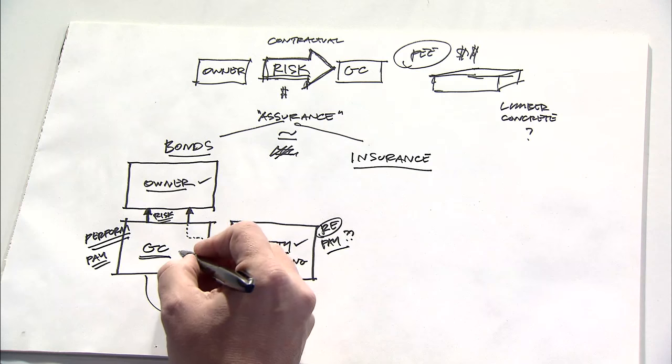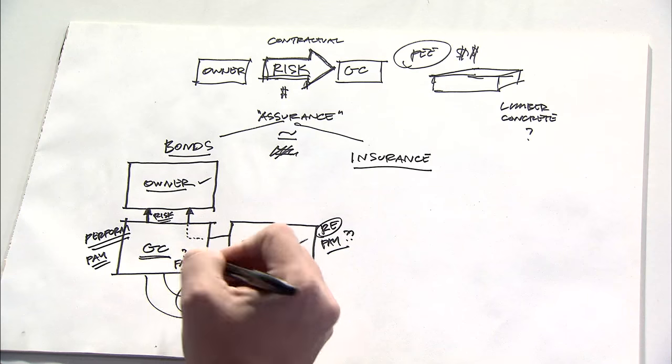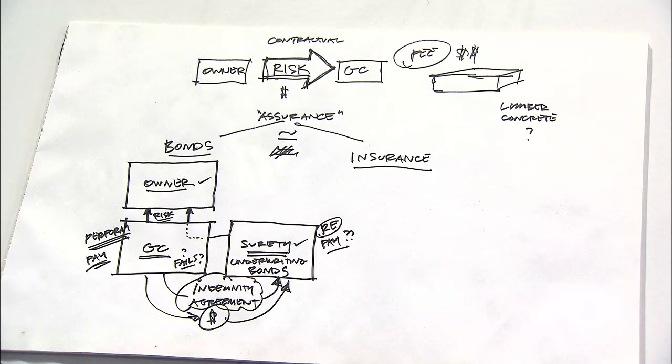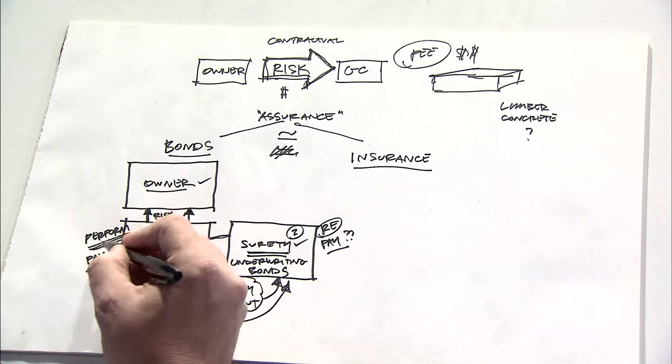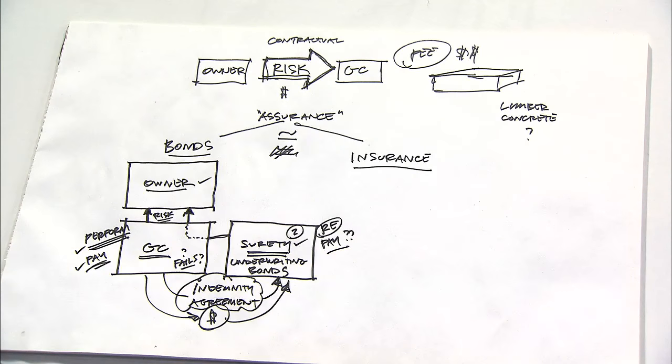Basically, what this means is that if the general contractor fails to either perform or pay, then the surety, as a second entity that's obligated, would then also be bound to the owner to both perform and pay for the completion of the project.